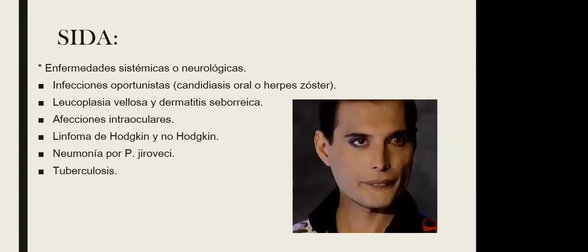Antes de ver las lesiones dermatológicas de lleno, en el SIDA se van a presentar muchas enfermedades, tanto sistémicas como oportunistas. Algunas de las más comunes son: candidiasis oral, herpes zóster, leucoplasia vellosa, dermatitis seborreica. Hay algunas infecciones que no vamos a ver en esta presentación para no alargarla, como la tuberculosis y la neumonía por Pneumocystis. De hecho, Freddy Mercury falleció por una neumonía a causa del VIH que padecía.